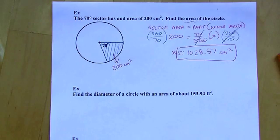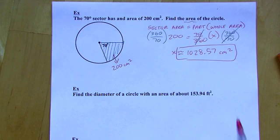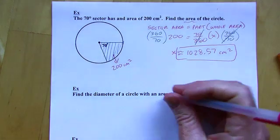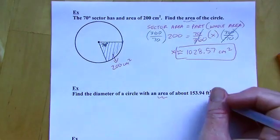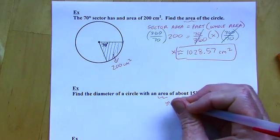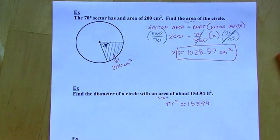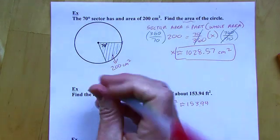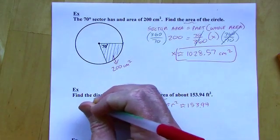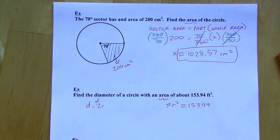All right. And then next, find the diameter of a circle with an area of about 153.94 feet squared. So what I'm doing here is I'm thinking, well, I know the area formula. So let's set that up. So if the area is this, then I can say πr² is about 153.94. Now, with this, remember π is just a number. So we can actually solve this for r. Now, it's not asking me for the radius, but I also know that the diameter is going to be twice as big as the radius. So if I can find the radius, then I can get the diameter, no problem. So that's what I'm going to do over here.